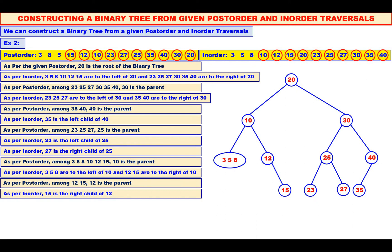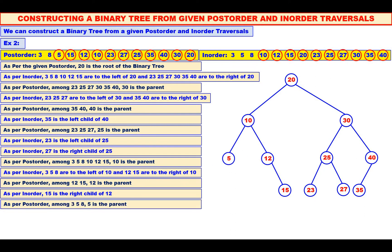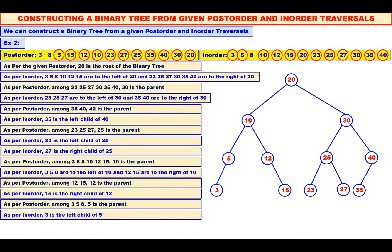Now, among 3, 5, 8, which is the root? See the post-order — the last one is 5. So 5 is the root. Mark 5 and also mark 5 in the inorder. 3 is to the left of 5 and 8 is to the right of 5. Therefore, 3 should be the left child of 5 and 8 should be the right child of 5.